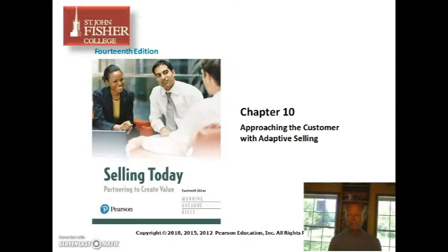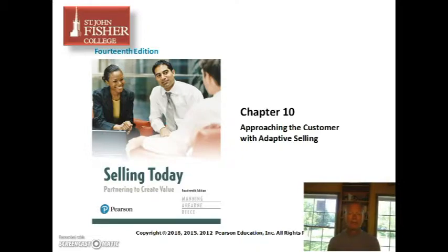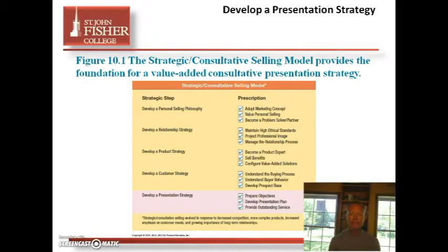The objective of Chapter 10 — approaching the customer with adaptive selling — is to understand a strategy going into the customer meeting and a strategy for when you get in front of the customer. We've talked about prospecting in the past, case studies, how to find prospects. This chapter is more about what you will actually do when you get in there.